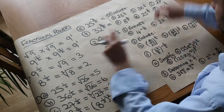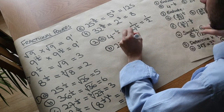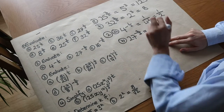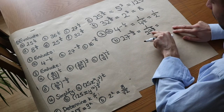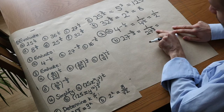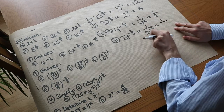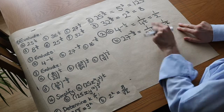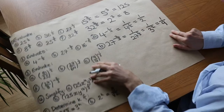For 27 to the minus 2 thirds: first deal with the negative to get 1 over 27 to the 2 thirds. Then, since the denominator is 3, we take the cube root of 27, which is 3. We still have that 2 in the numerator, so it becomes 1 over 3 squared. Don't leave it as that — write it as 1 over 9.